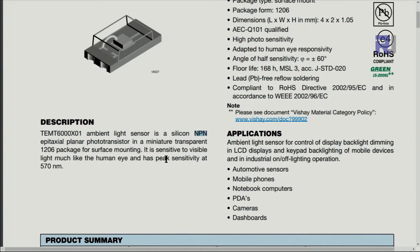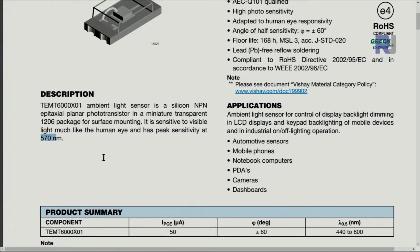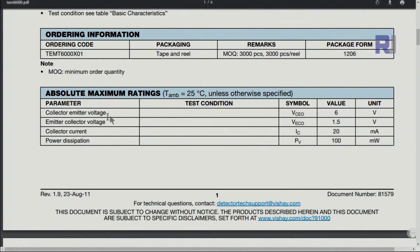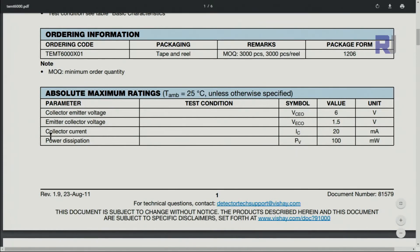Peak sensitivity is with the human eye at 570 nanometer, that's visible light for human. It can be used in phones, automotive, or other devices. The voltage of collector emitter is 6 volts and emitter collector is 1.5, so that's the maximum value that you can get. The collector current is 20 milliampere.